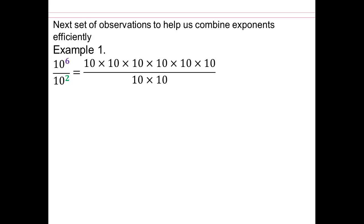Now I want to know how do we simplify that. Remember equivalent fractions — what does equivalent fractions allow you to do? You can divide numerator and denominator by the same quantity. We have the same number 10 on numerator and denominator, so I can divide numerator and denominator by 10 and another 10. So I ended up reducing this fraction.